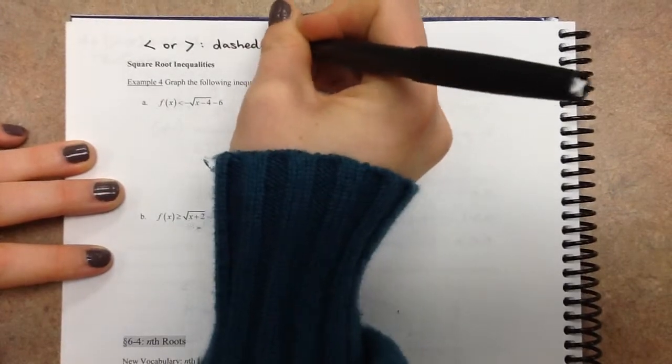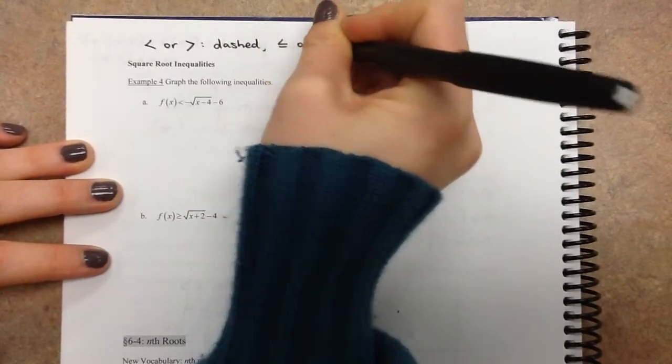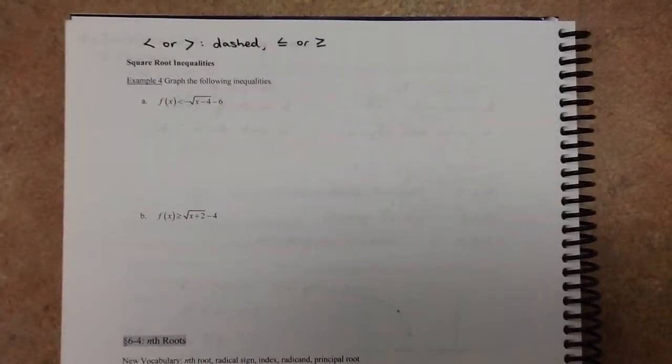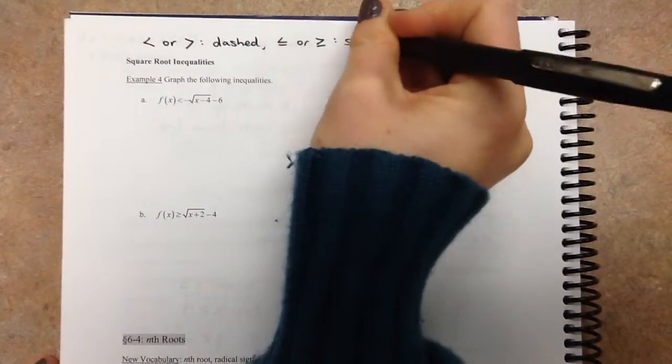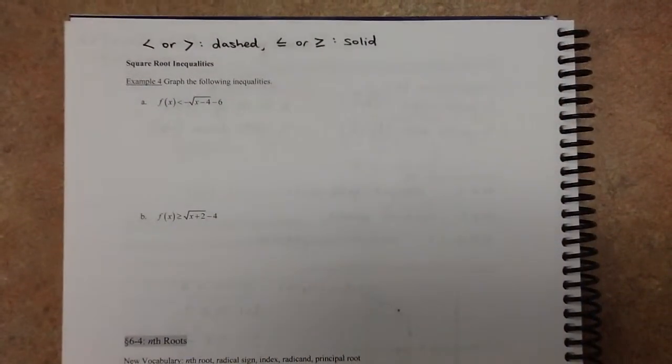Whereas your less than or equal to or greater than or equal to, so if you do have the or equal to, then it ends up being a solid line. That's nothing new, we've been doing inequalities for a while so you guys know that.